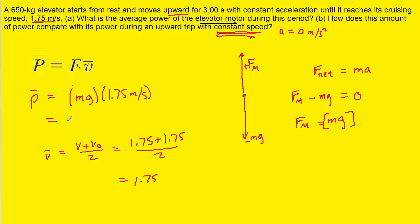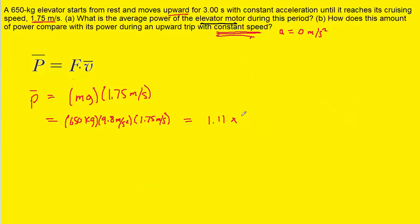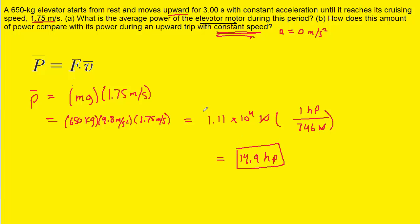Plugging into the power equation: mass of 650 kilograms, g of 9.8, and average velocity of 1.75 meters per second. Multiplying these three values gives 1.11 × 10⁴ watts. Converting to horsepower using 1 horsepower equals 746 watts, the watts cancel and we get approximately 14.9 horsepower — that's the correct answer to part B.